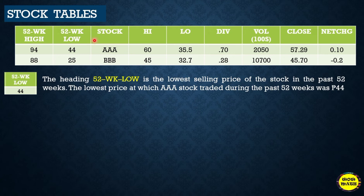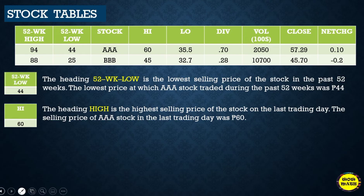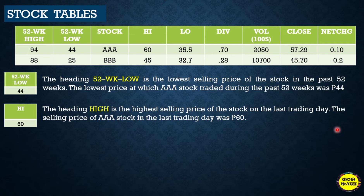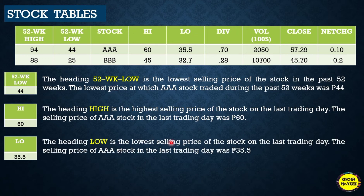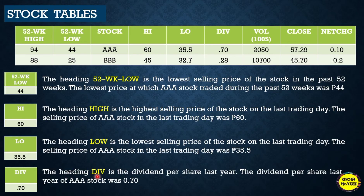The heading 'High' is the highest selling price of the stock on the last trading day — for AAA, that was 60 pesos. The heading 'Low' is the lowest selling price on the last trading day — for AAA, that was 35.50 pesos. The heading 'Div' is the dividend per share last year — for AAA stock, that was 0.70 pesos.